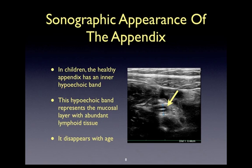What can help in identifying the appendix is recognizing the classic features of the appendix, which is that it is a blind-ended tubular structure. You may also be able to visualize the discrete layers of the appendix, or you may simply identify the hyperechoic outer wall with its lymphoid tissue-dense internal hypoechoic band. This will often surround the mucosal-lumen interface. This hypoechoic band is rich in lymphoid tissue and thus will disappear with age.